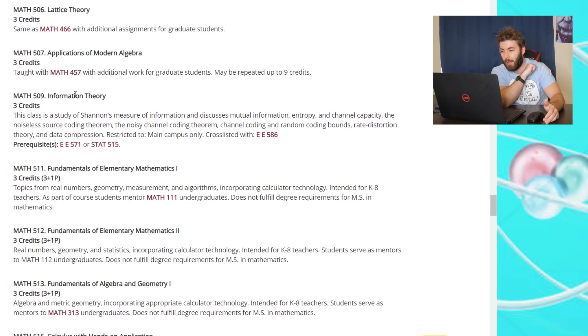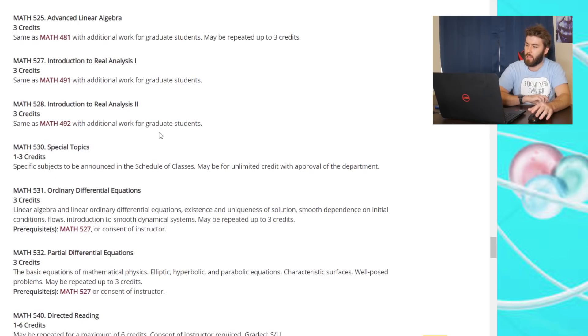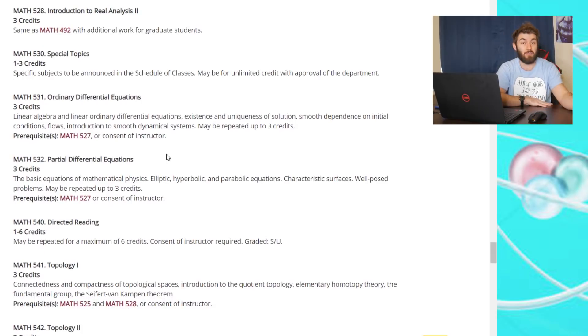Information theory. A class is a study of Shannon's measure of information and discuss mutual information, entropy, and channel capacity. The noiseless source coding theorem. It seems like a lot of the exact same courses as undergrad, but just more in depth, kind of like physics. Ordinary differential equations, linear algebra, and linear ordinary differential equations. Existence, uniqueness, initial conditions sounds exactly like what everyone's taken before.